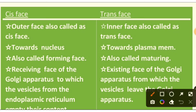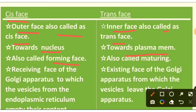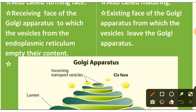The cis phase is the outer phase, also called the cis phase, and the trans phase is the inner phase, also called the trans phase. The cis phase is situated towards the nucleus and the trans phase is situated towards the plasma membrane. The cis phase is also called the forming phase and the trans phase is also called the maturing phase. The cis phase is the receiving phase of the Golgi apparatus, to which vesicles from the endoplasmic reticulum empty their content, while the trans phase is the exiting phase from which vesicles leave the Golgi apparatus.